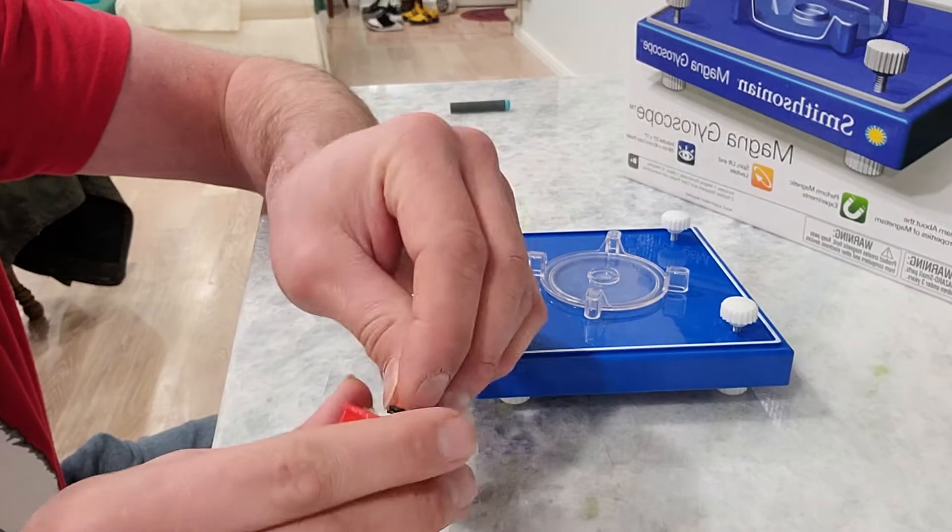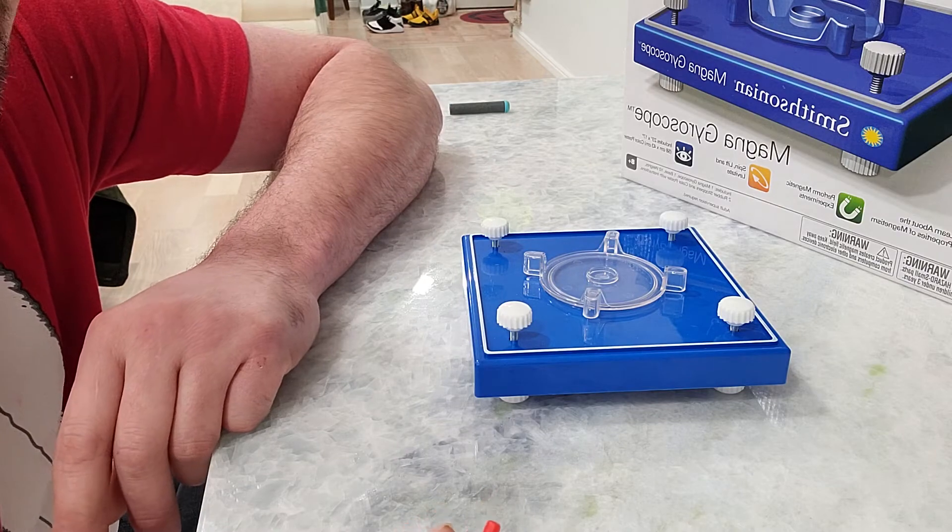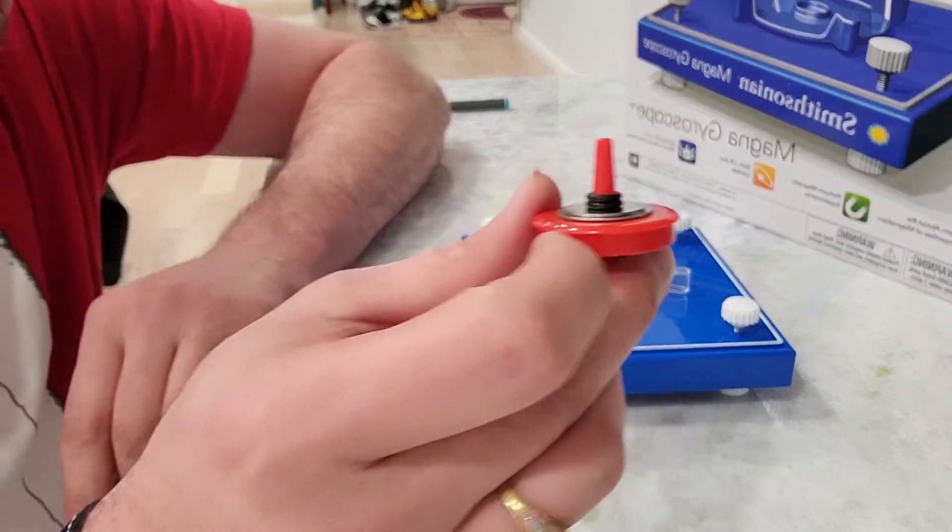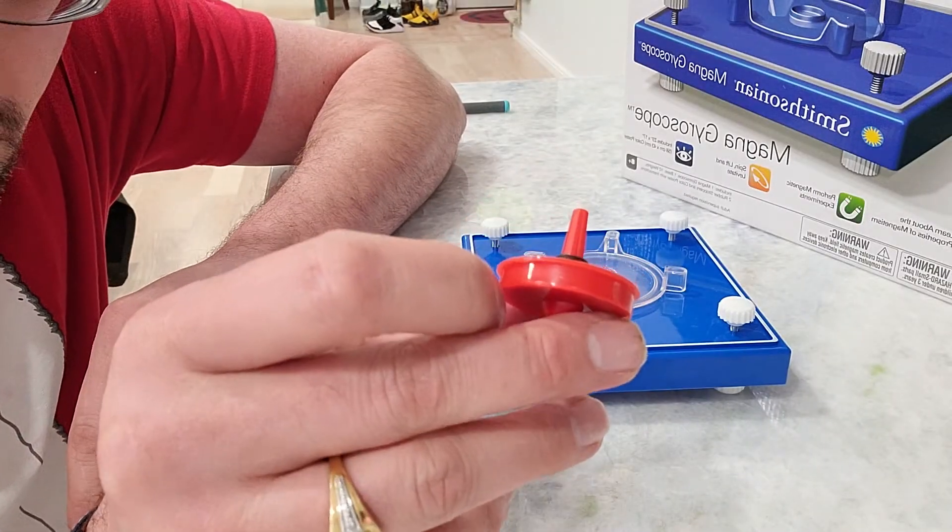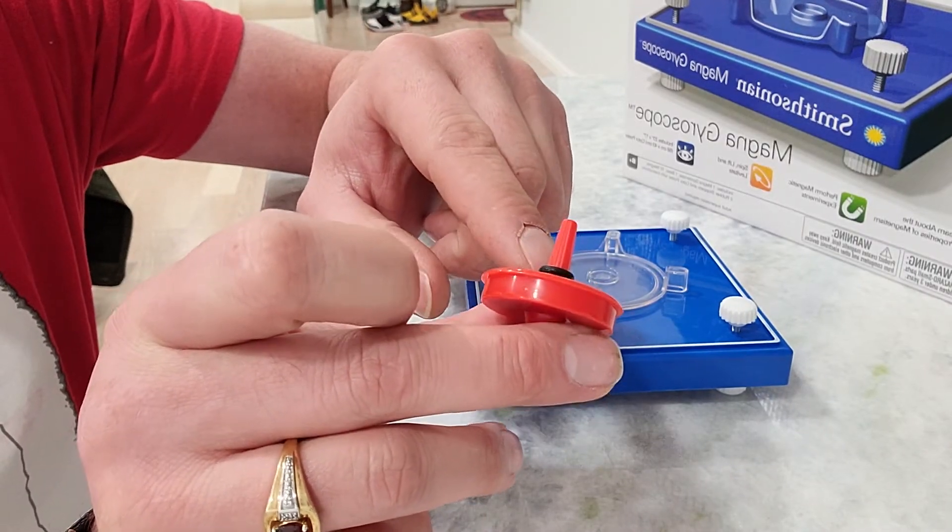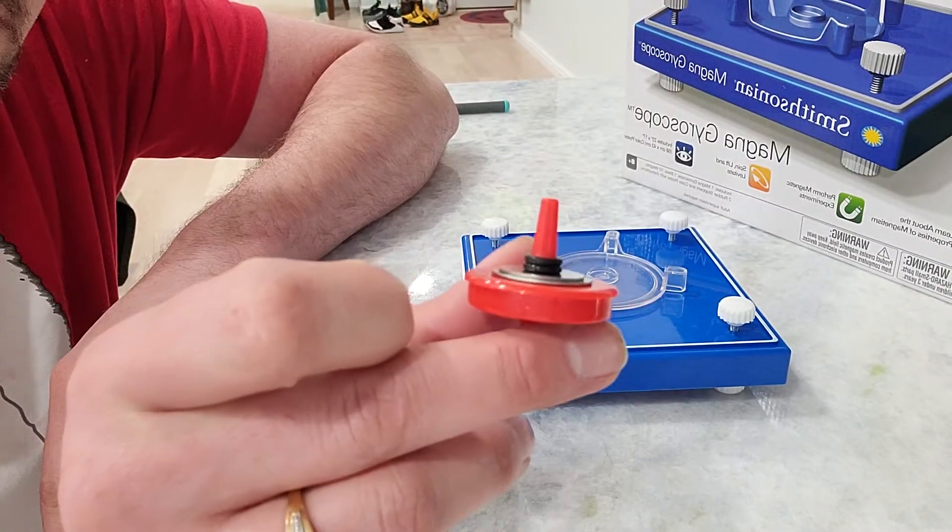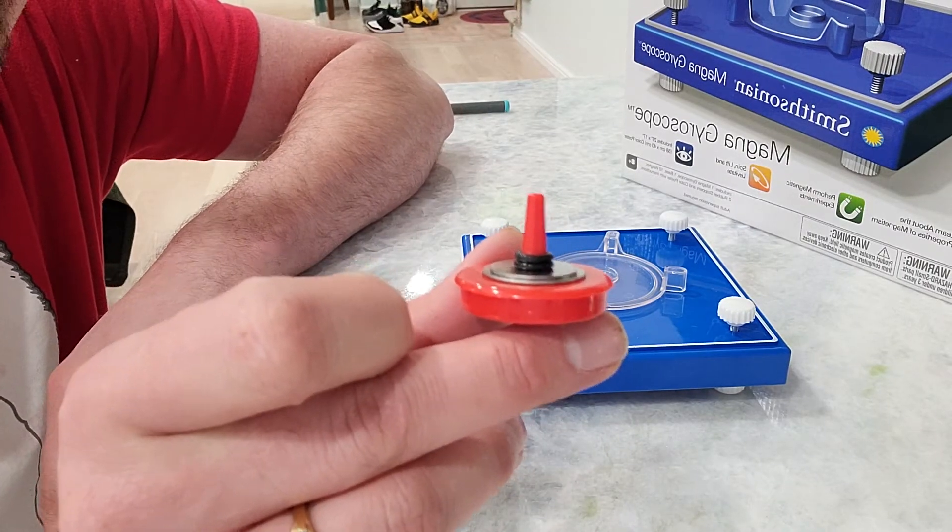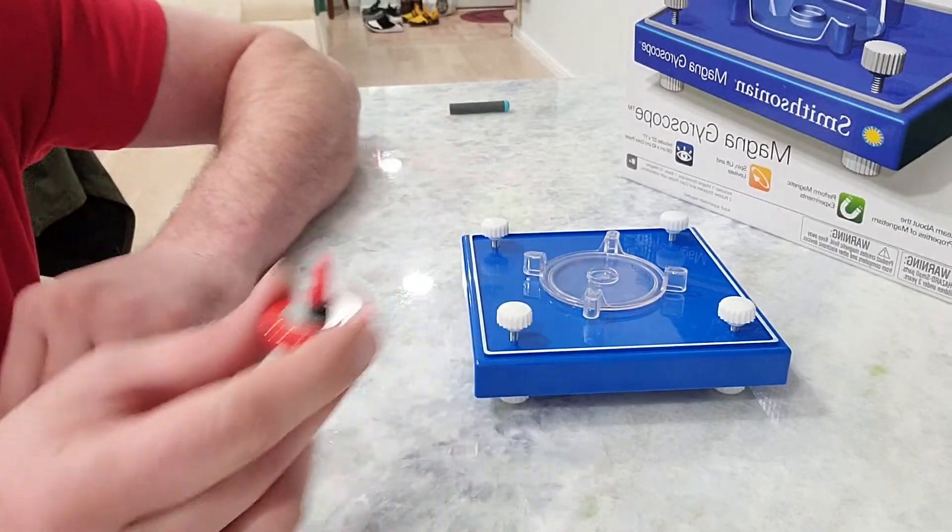Now what I found is this thing is most sensitive to weight after you figure out how to get it to spin on there. So for me what works is one of the big metal washers, one of the little metal washers, and the two plastic o-rings. That seems to be about the right weight for it.